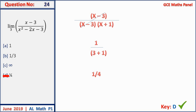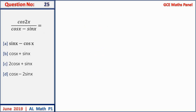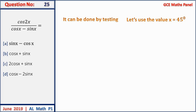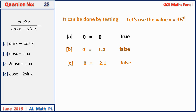Question 25: rather than simplifying, we test with x = 45°. The left-hand side cos(2 × 45°) = cos 90° = 0. Testing option A: sin 0° × sin 45° − cos 45° gives 0 — true. Testing B: cos 45° + sin 45° ≈ 1.4 — false. Testing C: 2cos 45° + sin 45° ≈ 2.1 — false. Testing D: cos 45° − 2sin 45° ≈ −0.7 — false. Correct answer is A.